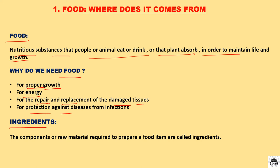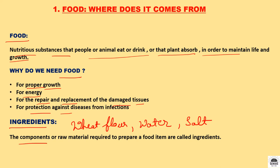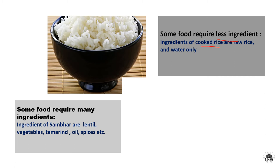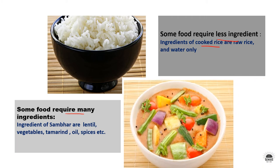Now, ingredients. To prepare a dish we need different types of components. Like to prepare a chapati, we need wheat flour, water and salt. Similarly, to prepare any dish we need different components. So the components or raw materials required to prepare a food item are called ingredients. Some food requires fewer ingredients, like cooked rice needs raw rice and water. Some food requires many ingredients, like sambhar needs lentil, vegetables, tamarind, oil and spices.